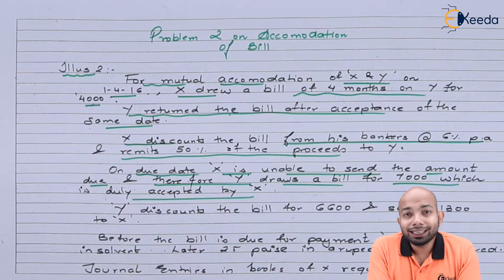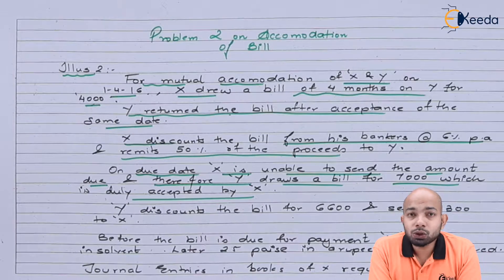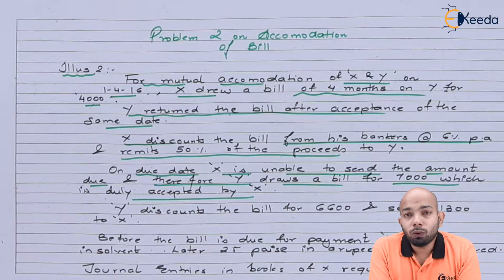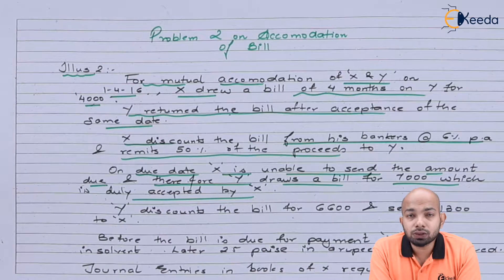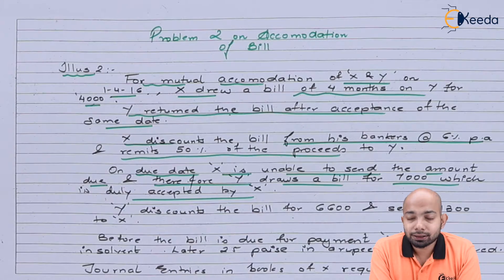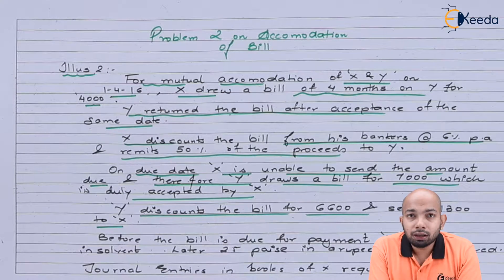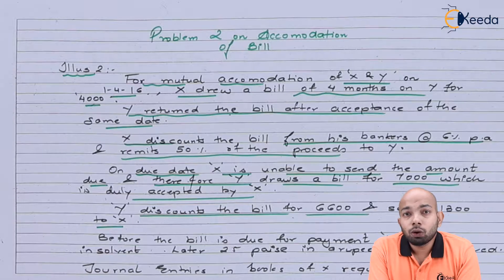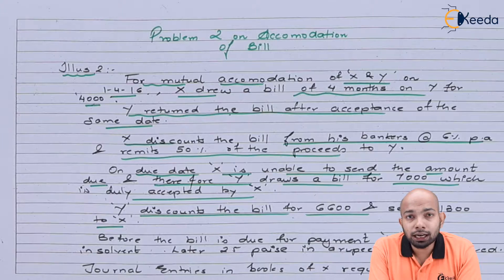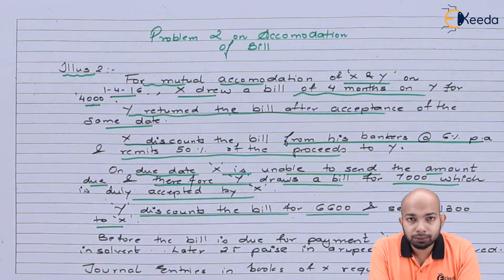On the due date, it happened that X couldn't pay up the amount. Hence, Y drew another bill on X for an amount of Rs 7,000 and that was accepted by X. Y discounts the same bill for Rs 6,600 and sends Rs 1,300 to X so that X can go ahead and pay up the earlier bill.